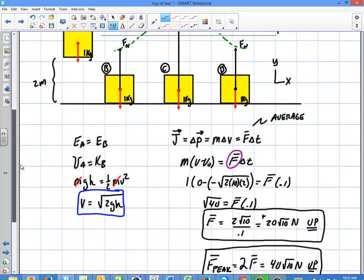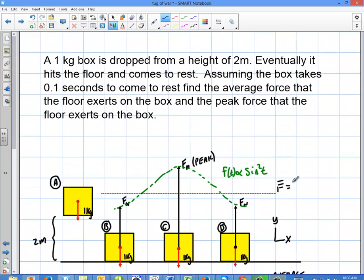And we said that that was going to be 20 root 10 newtons up, right? And then we had a peak force here, which was just twice the average force, and that's going to equal 40 root 10 newtons up.